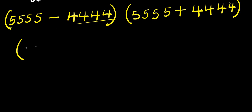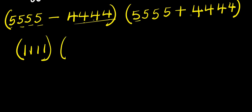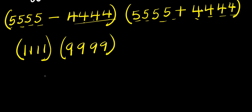Five minus four, that is one. Five minus four again, one. Five minus four, one. Five minus four, we have one. So we get 1111. Then five plus four we have nine. Five plus four again we have nine. Five plus four, nine. Five plus four again, nine. So we get 9999.